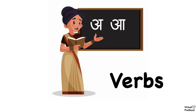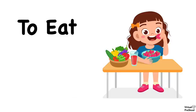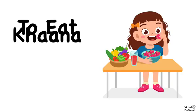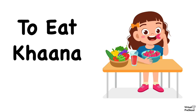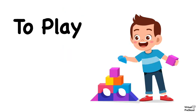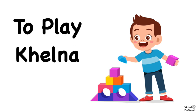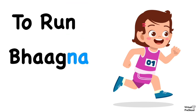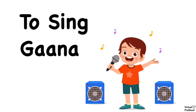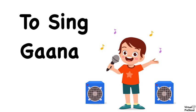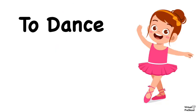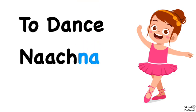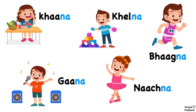Now let's talk about verbs in Hindi. To eat in Hindi is kana — notice the last two letters: kana ends with na. To play is kelna — again, it ends with na. To run is bhagna — and again, it ends with na. To sing is ganna — yes, it ends with na. And nachana is to dance — and of course, it ends with na. So all Hindi verbs end with na.